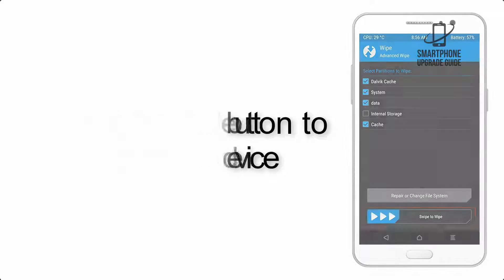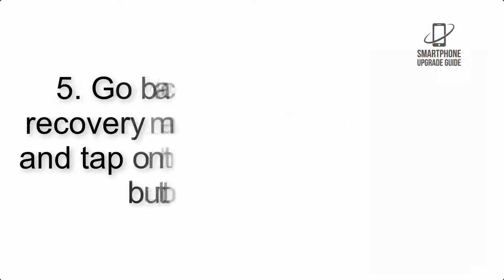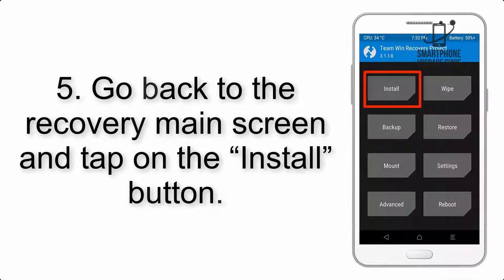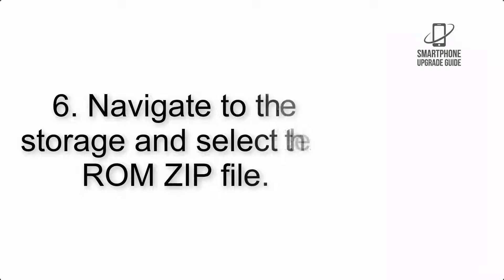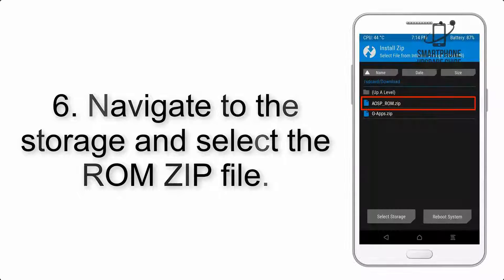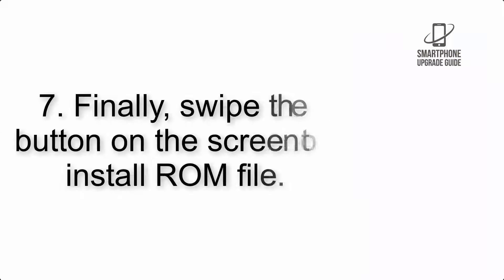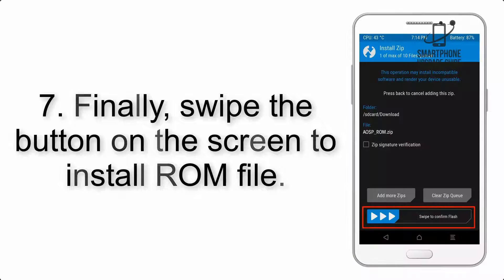Step 4: swipe the button to wipe the device. Step 5: go back to the recovery main screen and tap on the Install button. Step 6: navigate to the storage and select the ROM zip file.